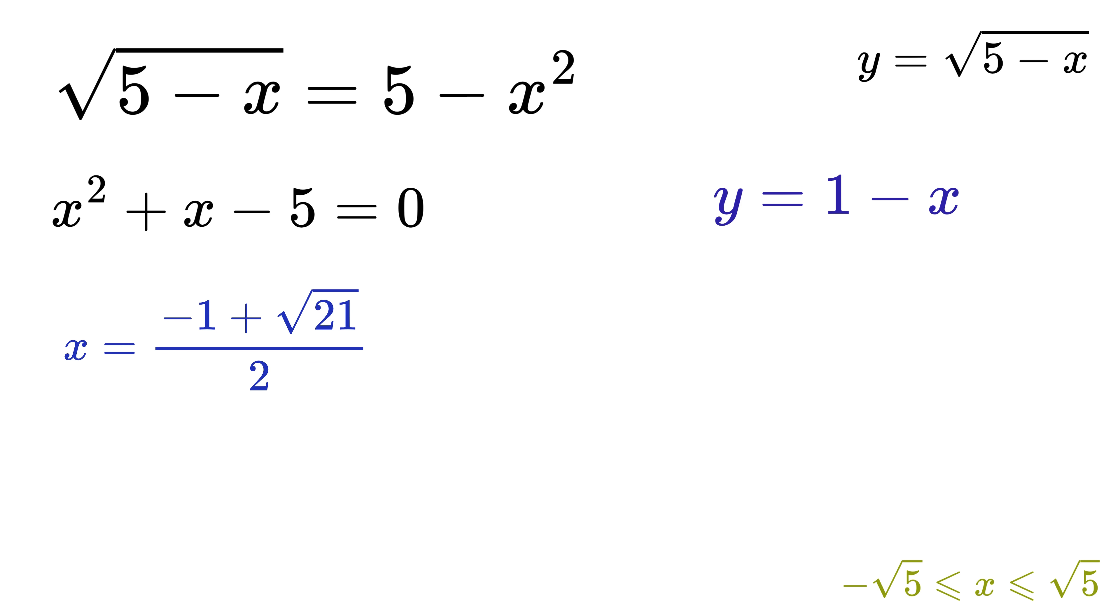Now consider case 2. We have y equals 1 minus x. Substitute y to get this, then square both sides to eliminate the square root. Expand this to get 1 plus x squared minus 2 times x equals 5 minus x. After rearranging this, we get this nice quadratic equation, whose roots will be this and this. Now this root is approximately this, and again, it does not satisfy the condition we have on x. Therefore, this solution is also not valid.